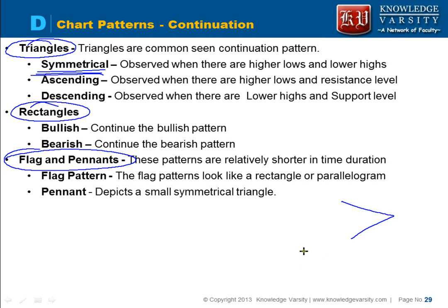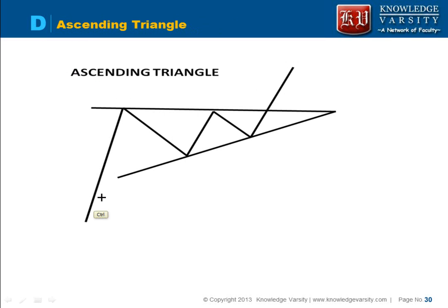We will see examples of all these — ascending, descending, bullish, bearish flag patterns, and the pennant pattern. In the ascending triangle pattern, the stock price was increasing, and the pattern will continue whatever trend was observed. It will hit the resistance line and come back.